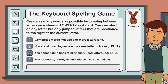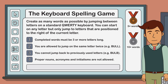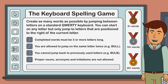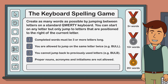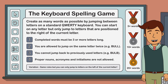Five or more words will score you a bronze medal. Ten or more words will score you a silver medal. And twenty or more words will score you a gold medal. Once you've found as many words as possible using these rules, you can also try a variation of the game moving from right to left across the keyboard instead.